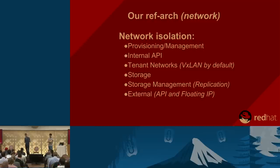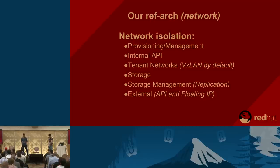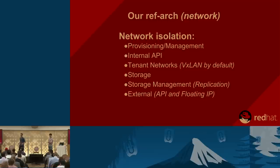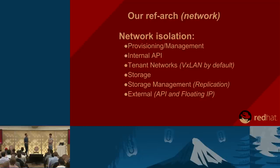The internal API network handles cluster communication — used by Galera for sync, by RabbitMQ, by OpenStack components for inter-service communication, and as the endpoint in the Keystone catalog. The tenant network is used for tenant communication — by default we use VXLAN, but you can use GRE or VLAN. The storage network is for Nova, Glance, and Cinder communication. The storage management network is dedicated to replication between Ceph/Swift nodes. The external network is for reaching the Horizon dashboard, the Keystone public URL, and also used as the floating IP network.